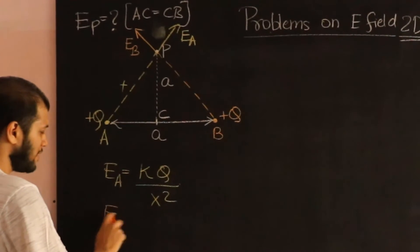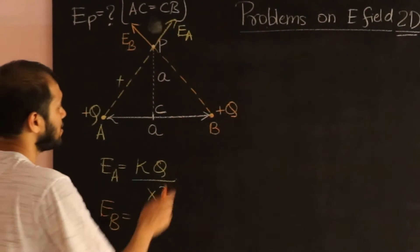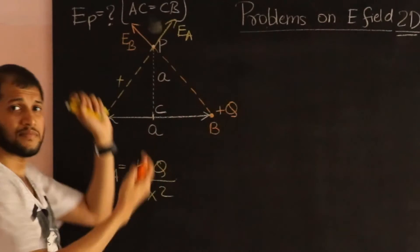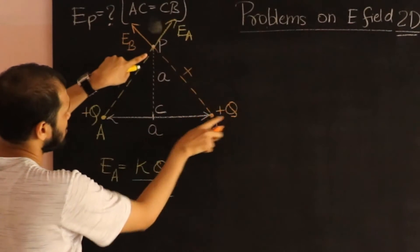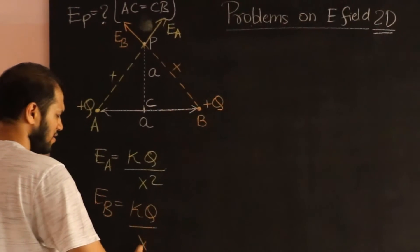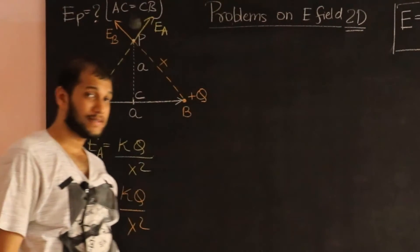Let's call that as X for now. So it's going to be X squared. Similarly, electric field due to B is going to be, it's going to be the same. Because the distance is going to be the same, X. And the charge is the same. So we get the same answer, KQ by X squared. So the magnitude is the same.